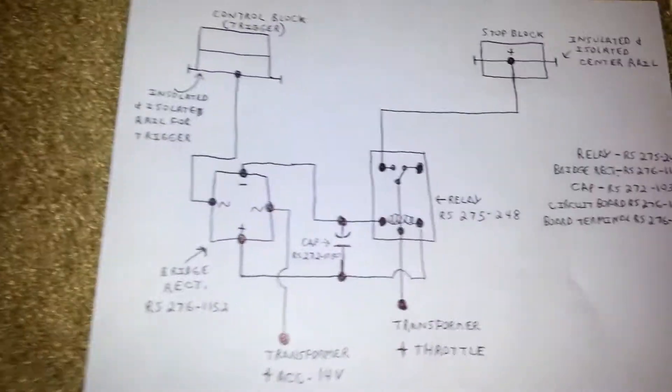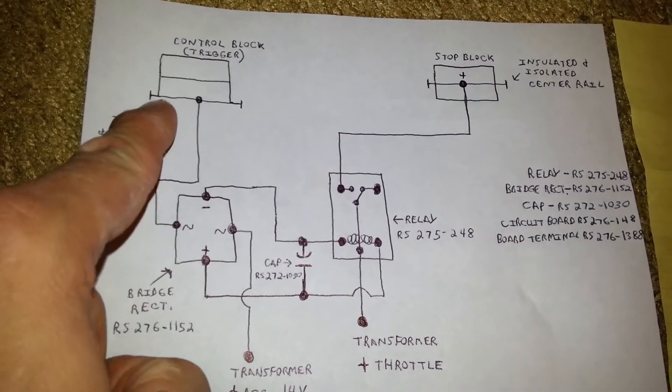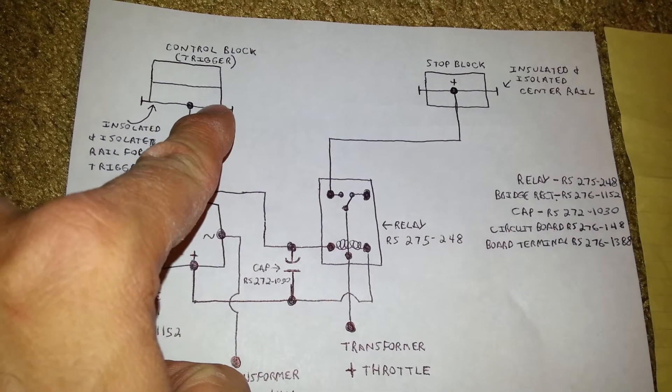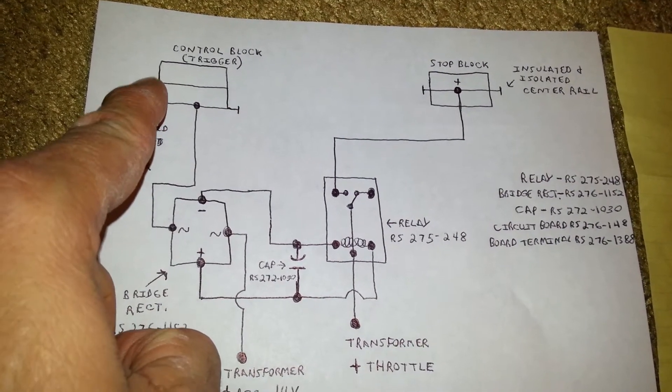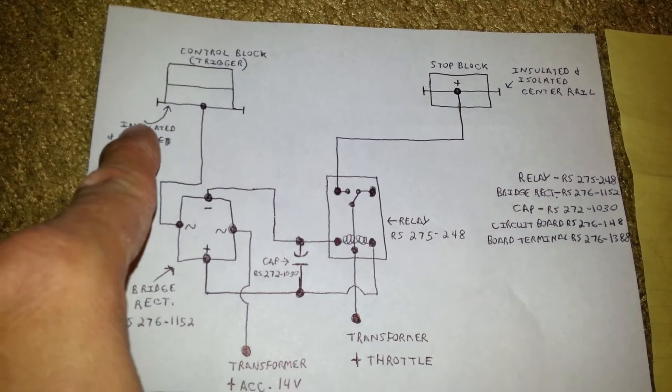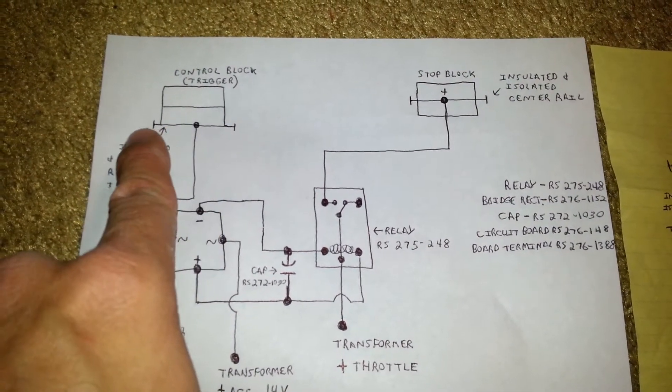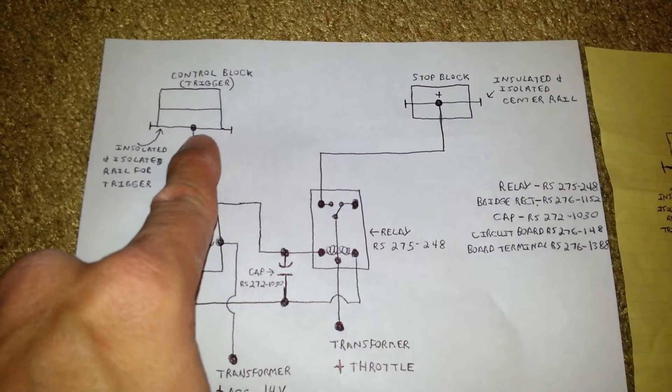Over here, here's the schematic without that incorporated into it. You simply have your control block. The train will never stop in this control block, no matter what. The only thing this control block is for is to isolate and insulate this outside rail so that it works as a trigger.